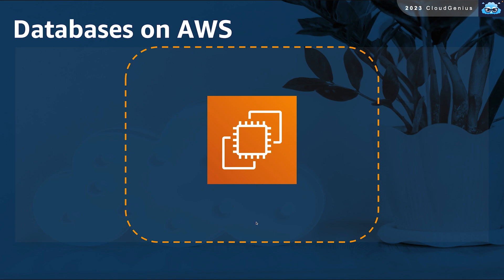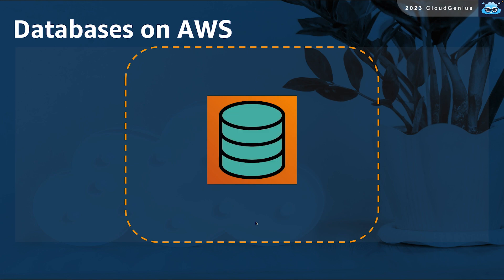You can run any database on AWS. You can get an EC2 instance with the correct operating system to support your database engine, boot your EC2 instance, log into it, and start installing and setting up your database. However, in this case the customer will be responsible for the full setup, including updates and patches for the operating system and database software — essentially managing the database the same way they used to run it on-premises.